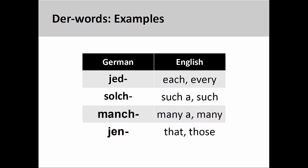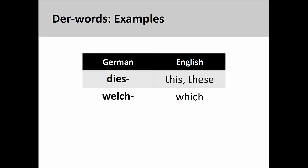Like definite articles, the endings for these der-words are determined by the number, gender, and case of the noun they modify. I will give you some examples on how to do this at the end of this presentation. Two der-words you will use a lot are dies- (this, these) and welch- (which). It is important to note that der-words can sometimes also be called dieser-words.